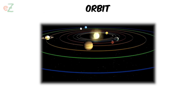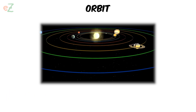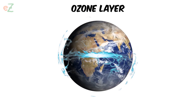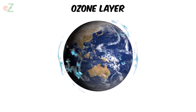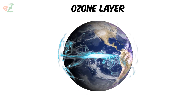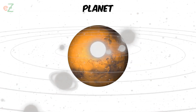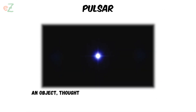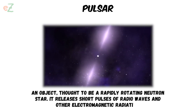Orbit. The curved path that a planet, satellite, or spacecraft moves as it circles around another object. Ozone layer. A part of Earth's atmosphere that absorbs lots of the sun's ultraviolet radiation. It is made of a gas called ozone, which is a molecule of three oxygen atoms. Planet. A large body in outer space that circles around the sun or another star. Pulsar. An object thought to be a rapidly rotating neutron star. It releases short pulses of radio waves and other electromagnetic radiation.